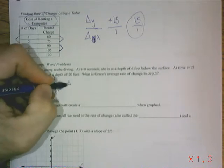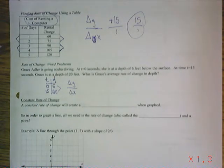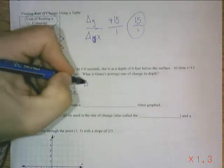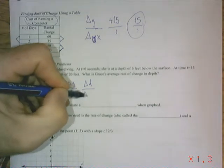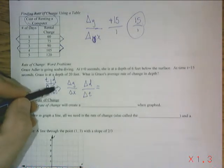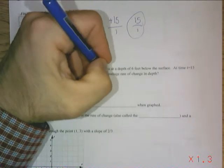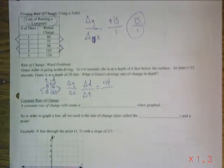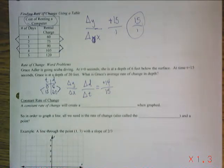So like before, it's the change in Y over the change in X. In this case, we don't really have a Y or a dependent variable. It's our change in D, which is the change in our depth over our change in time. It's really the same thing, X and Y's. So to go from six to 20, it is positive 14. And to go from zero to 15 is 15.